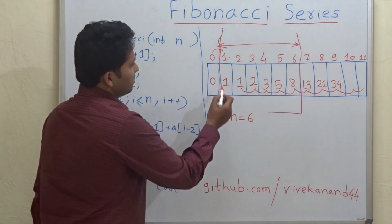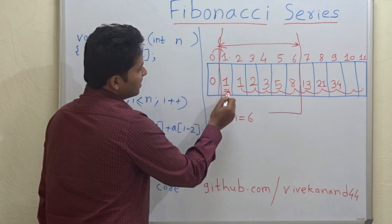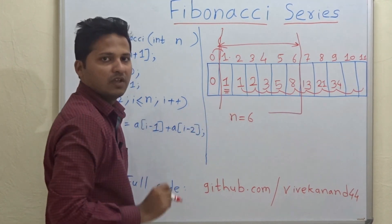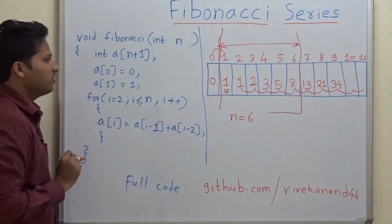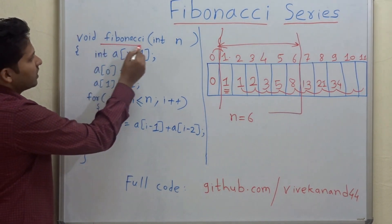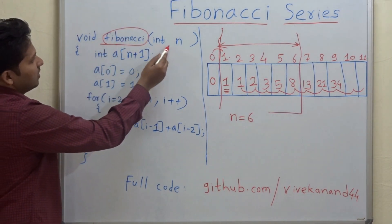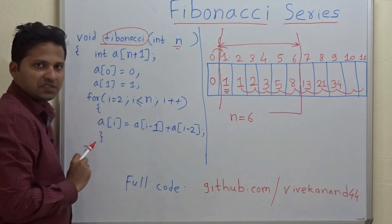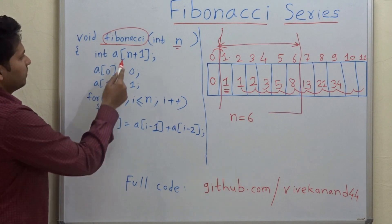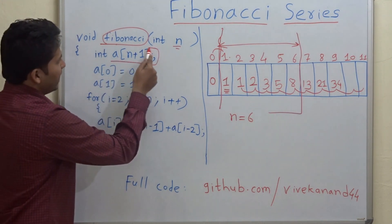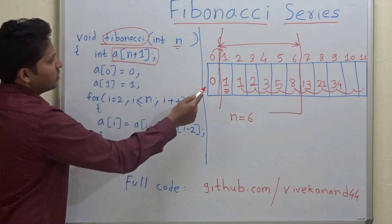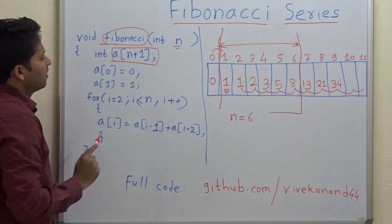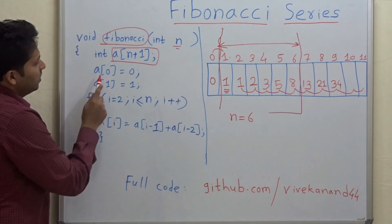Otherwise, the first element of the Fibonacci series is 1. So let us see how to write a program. This is the function fibonacci, and n is passed for knowing the end of the series. We are declaring an array a of n plus 1 because 0 is extra.